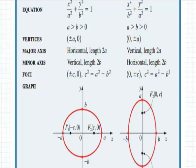So, the x-intercepts correspond to the so-called vertices of the ellipse. Now, this line segment that runs between these two vertices, that's called the major axis of the ellipse. And then, the line segment that runs between the two y-intercepts, this is called the minor axis of the ellipse.